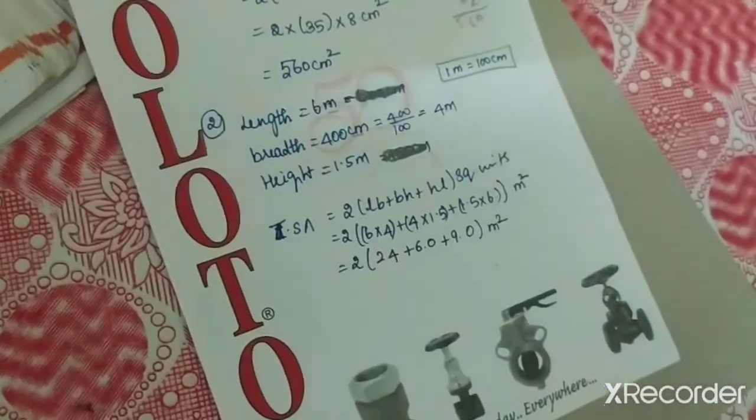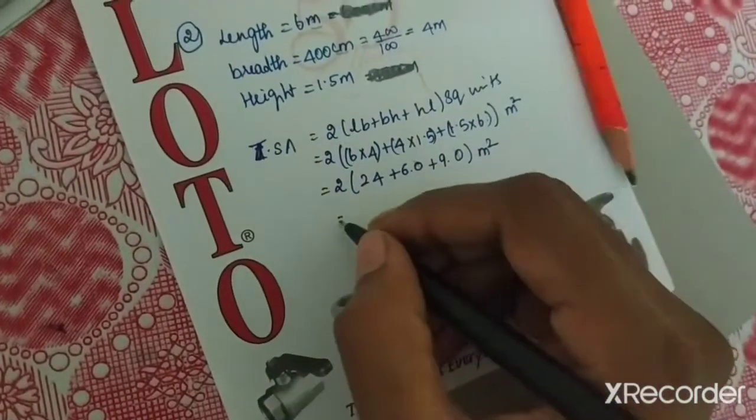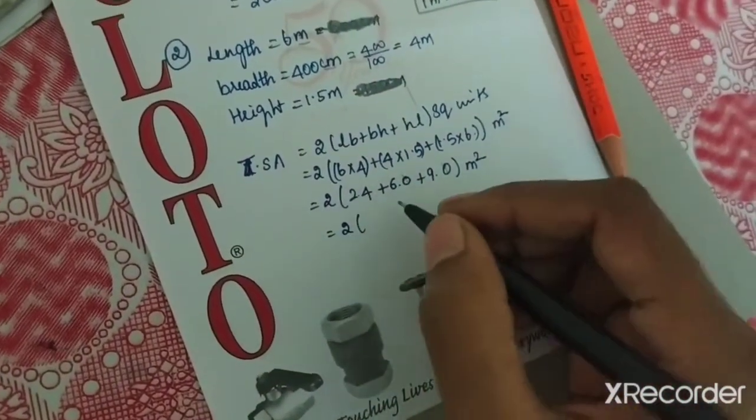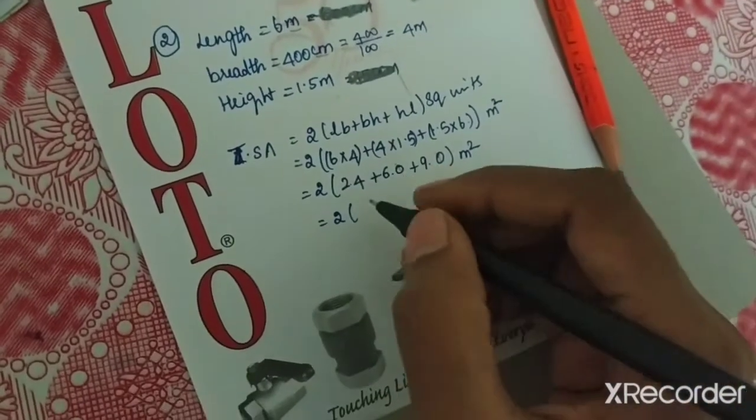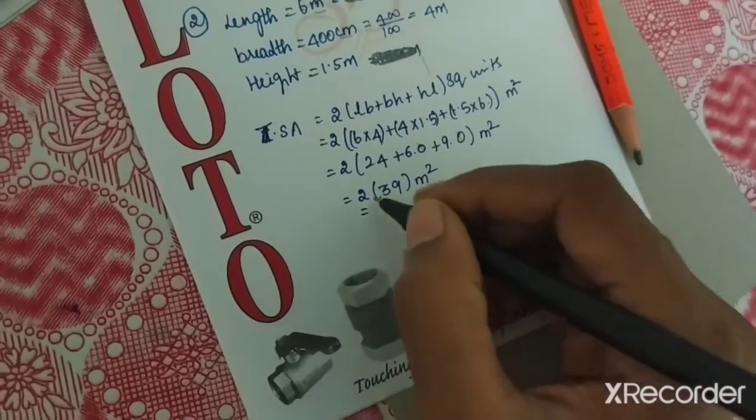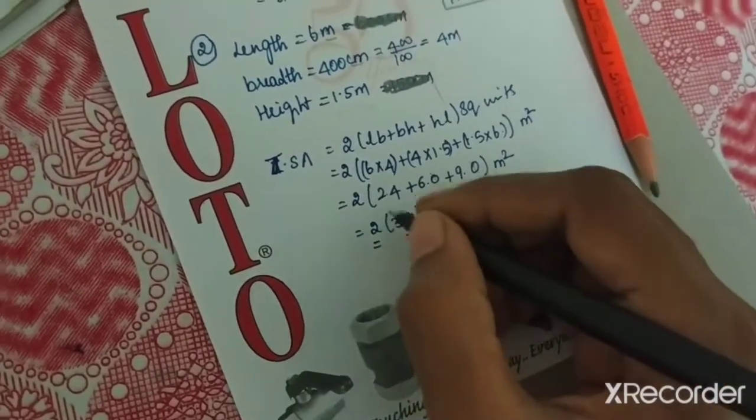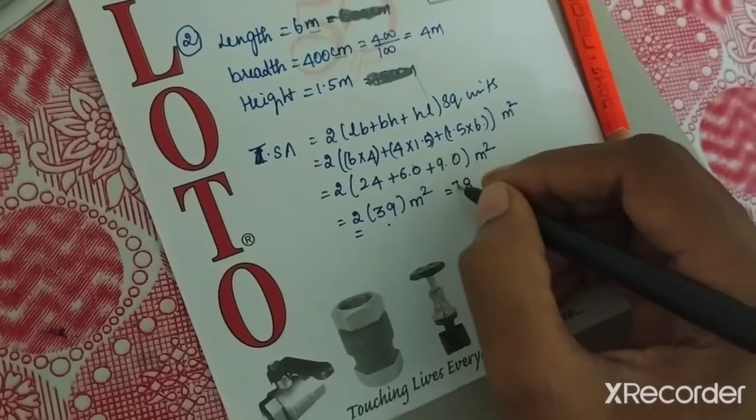Now two rectangles. So length into breadth, one and two. Two faces. So that value is top and bottom. This is 2 into LB. Length, breadth.